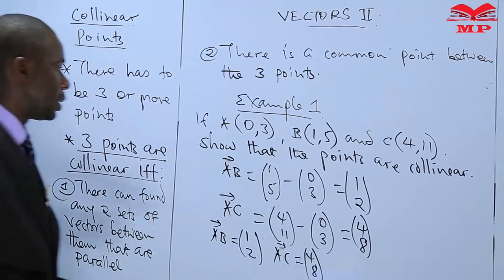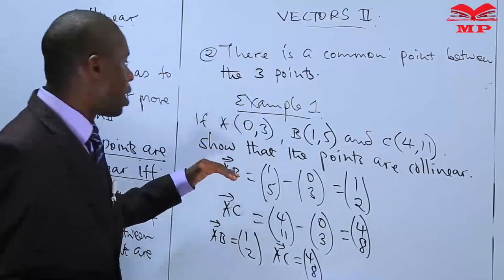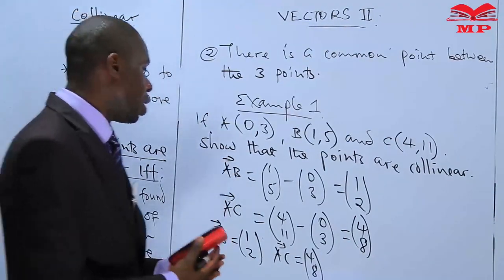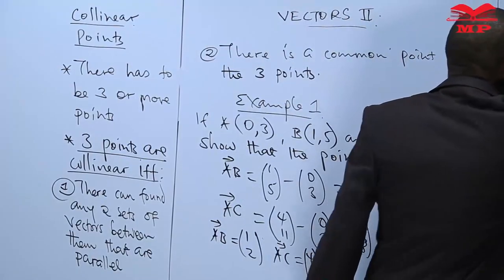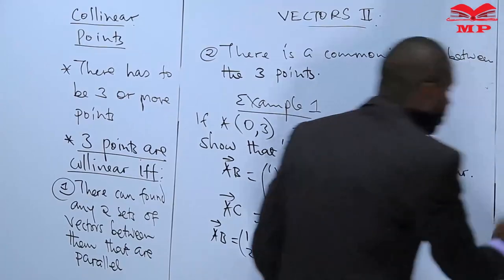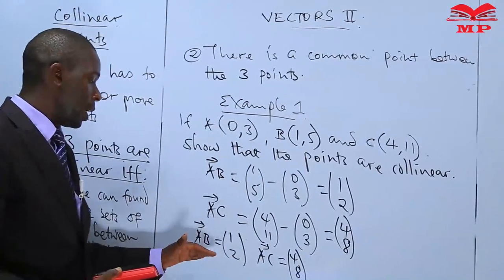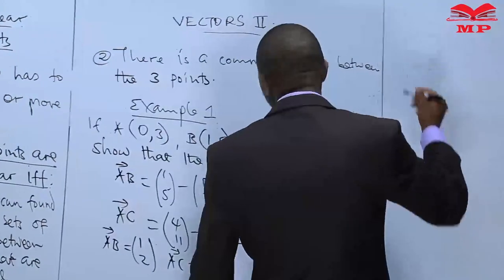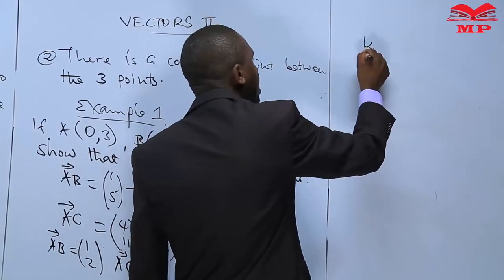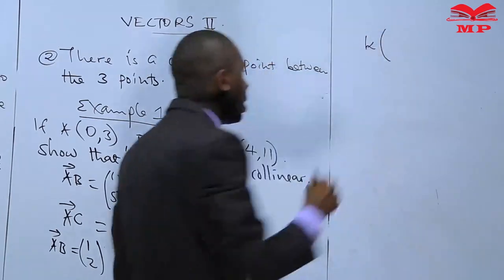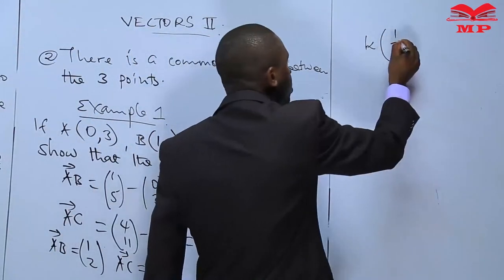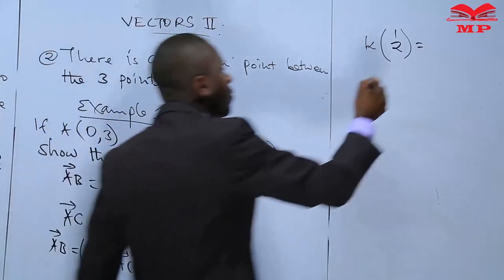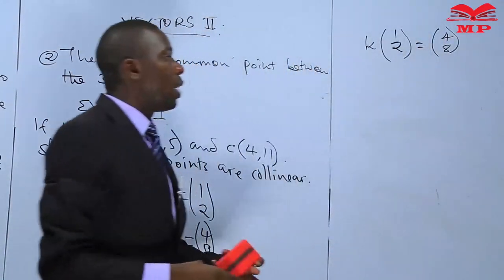Bearing in mind that to test collinearity we first test parallelism, then find a common point — looking at vectors AB and AC, for us to know whether they are parallel, we check if one is a scalar multiple of the other. We introduce a scalar multiplier k, and ask: does k times vector AB equal vector AC?